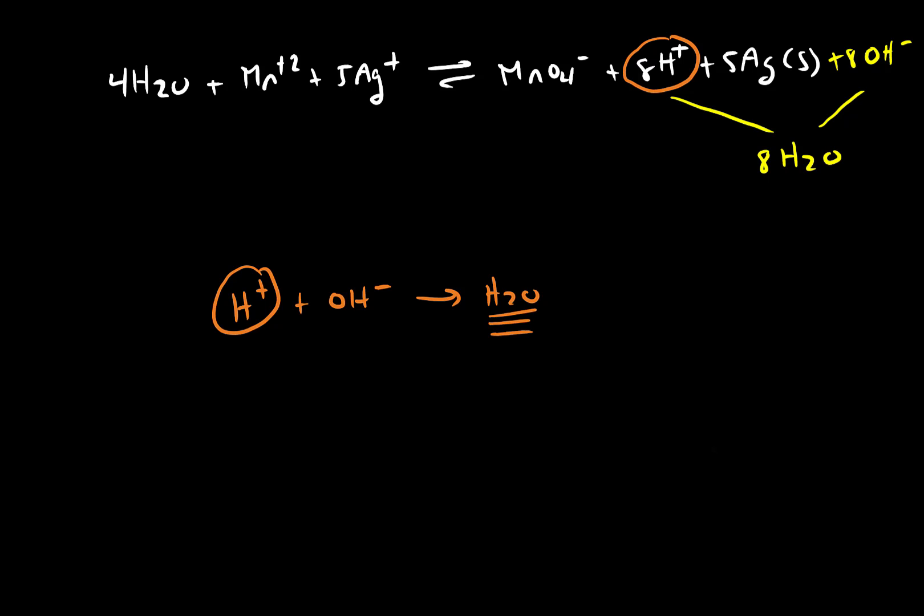But it's important to note here that if I put hydroxide on the product side, I also need to add it onto my reactant side. So if I add eight hydroxides to both my reactant side and my product side, the protons that exist in this balanced reaction become water. And that gets rid of our problem for basic conditions.